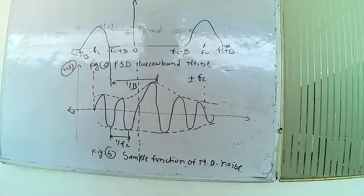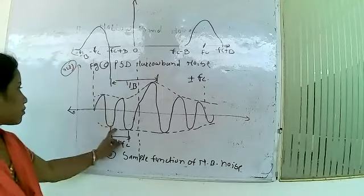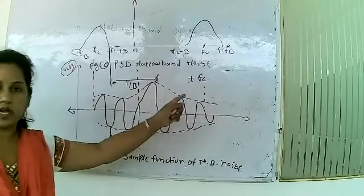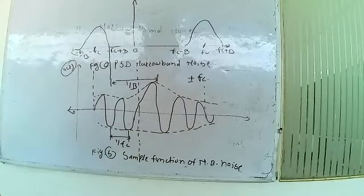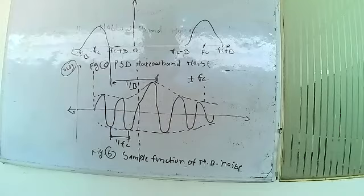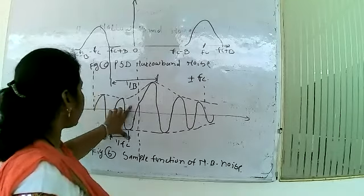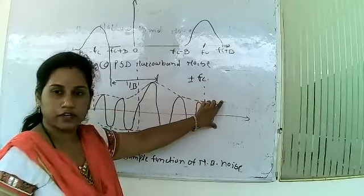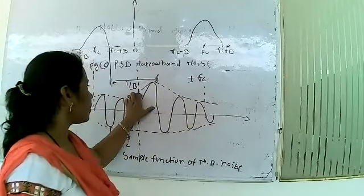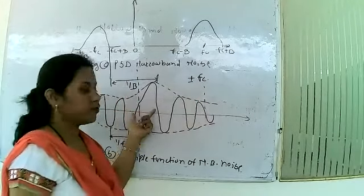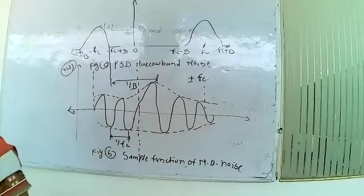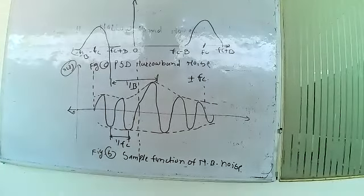The sample function N(t) of a narrow band noise is similar to a sine wave with frequency FC, and it undergoes slow variations in both amplitude and phase. There are slow variations in both the phase and the amplitude.